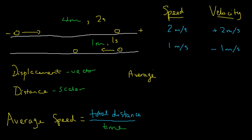To find the average speed, I should go back to the total distance — not just look at speeds at different times. The total distance from start to end is 4 plus 1, divided by the total time of 2 seconds plus 1 second, which is 3 seconds. So the answer is 5 over 3 meters per second. That is the average speed.